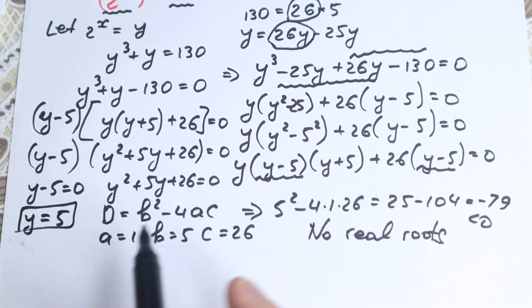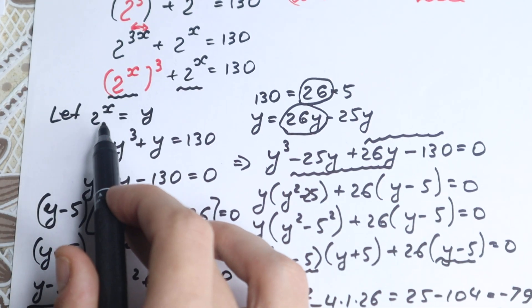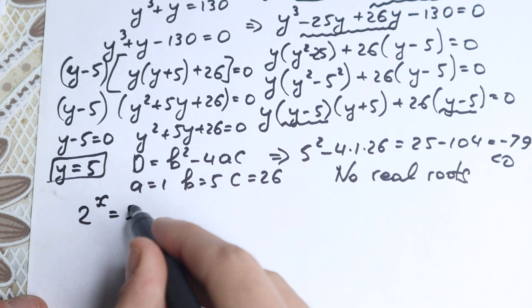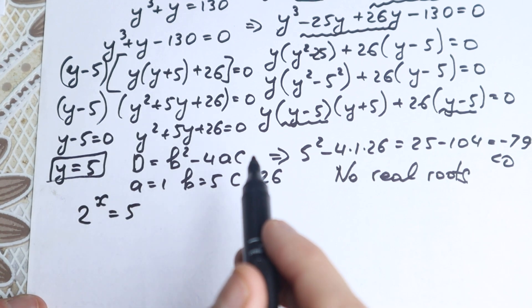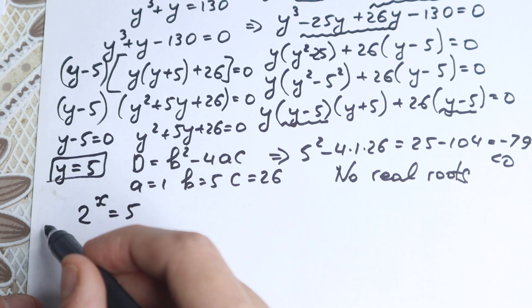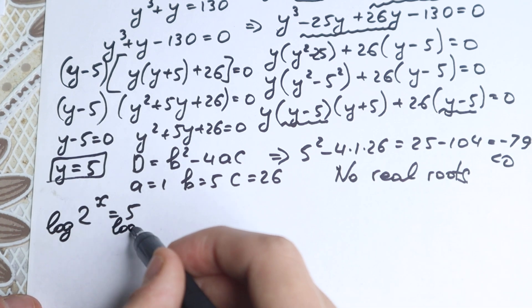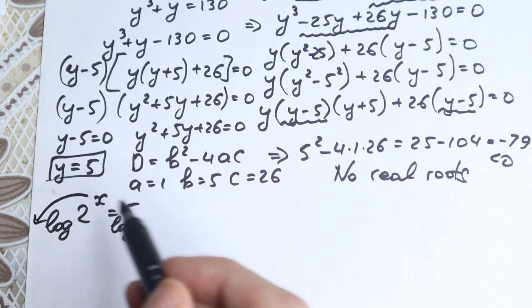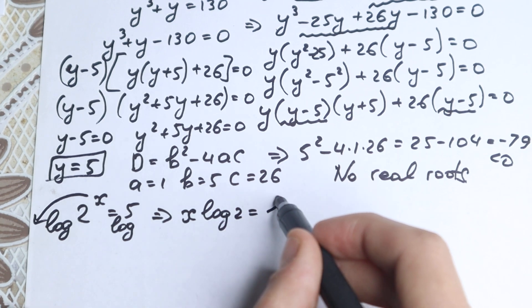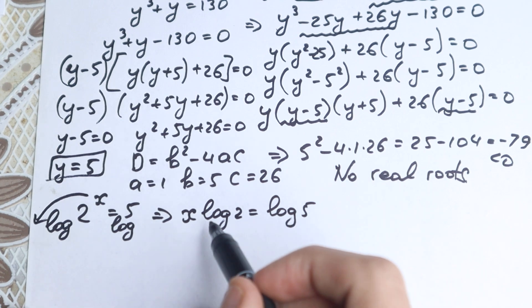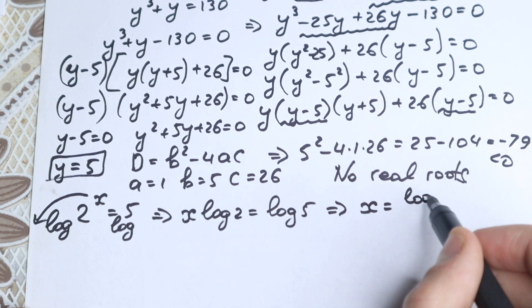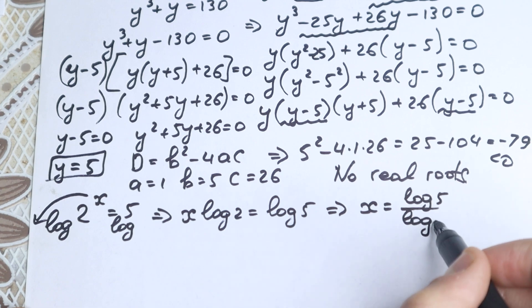This is our solution according to y. But we had a substitution: 2 to the x equals y, and y equals 5. So the equation becomes 2 to the x equals 5. This is a logarithm case. Taking log on both sides, we bring the power down: x times log 2 equals log 5. Log 5 and log 2 are constants, so dividing both sides by log 2 gives x equals log 5 over log 2. This is our answer.